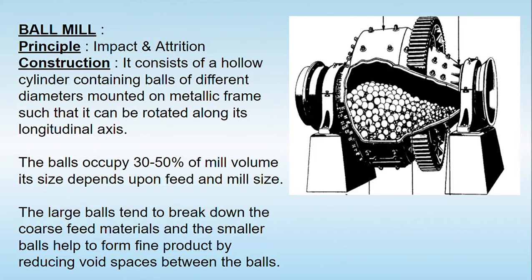The ball mill is one of the size reduction equipment which basically works on the principle of impact and attrition. Impact means a high shearing force is applied from the top onto the particles, and along with that the particles are also striking with each other, due to which size reduction takes place. I have already discussed all the mechanisms of size reduction in a previous video called 'Size Reduction: The Mechanism' — please refer to that video for more details.